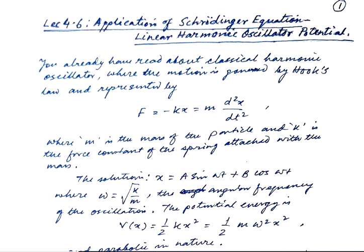We already read about the application of the Schrödinger equation — the infinitely deep potential well problem and the particle in the box. Today we are going to read the application of the linear harmonic oscillator. This is also referred to as the quantum harmonic oscillator potential problem.